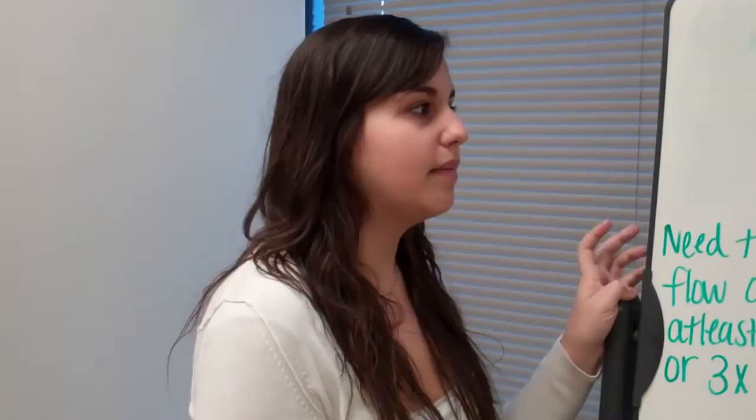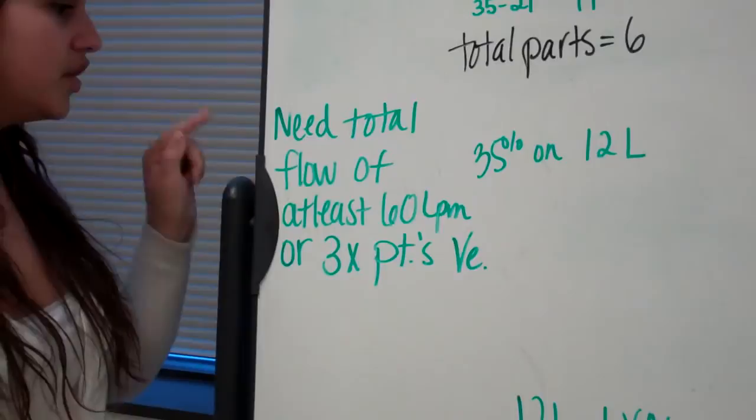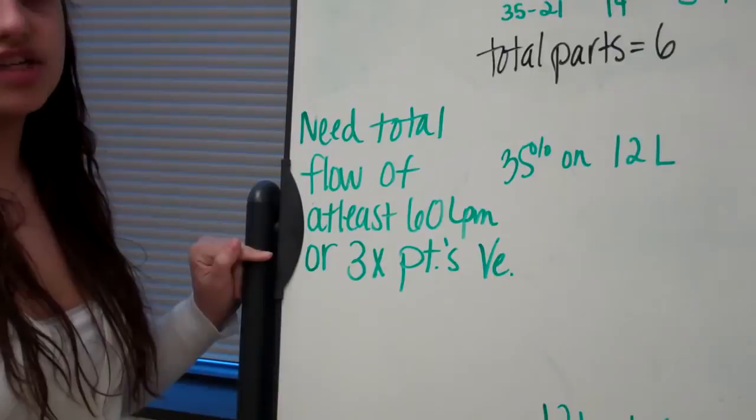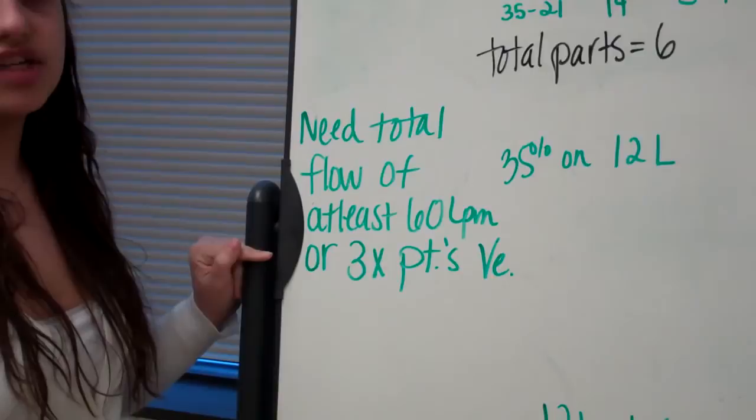After finding my total parts, I'm now going to figure out how much oxygen to bleed into the system. So I chose to put my 35%, which I have, on 12 liters. I chose 12 liters because you need a total flow of at least 60 liters per minute, or you need at least 3 times the patient's minute ventilation. Because I don't have a patient's minute ventilation, I'm going with 60.